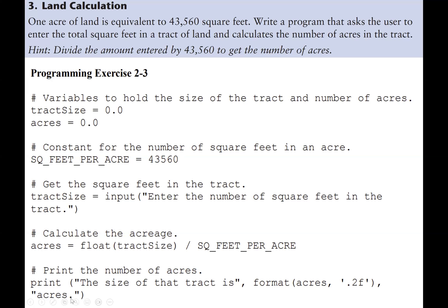And also we are using the format function here to convert it to two decimal places, which will be our answer. So we format acres and 0.2f, two decimal places.